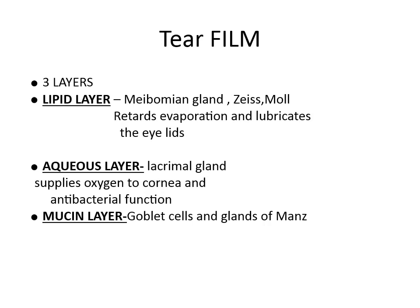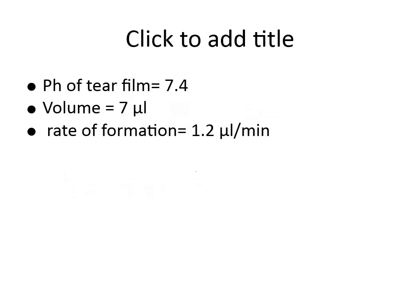The next layer is the aqueous layer. This layer is mainly secreted by the lacrimal gland. It supplies oxygen to the cornea and has an antibacterial function. The last layer is the mucin layer, which is mainly produced by the goblet cells and the glands of Manz.